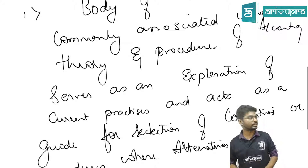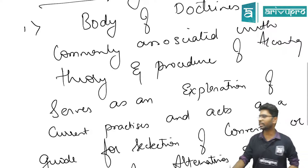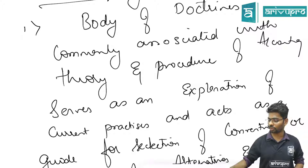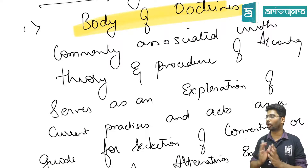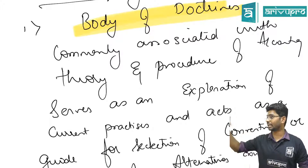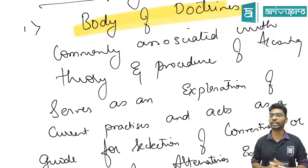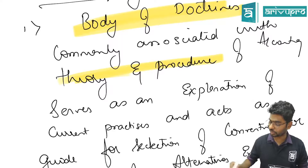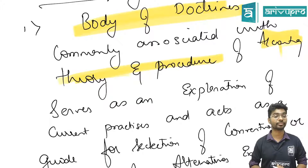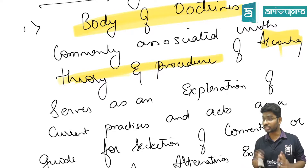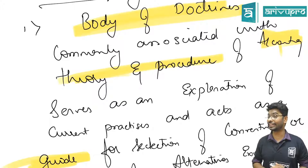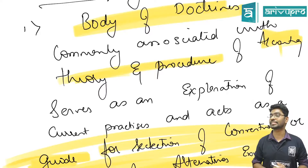A few key things about this definition: first, it is a body of doctrines — rules and regulations. Second, it is associated with the theory and procedure of accounting. It's not only giving you rules and regulations, it's also telling you how to do it. And whenever you have confusion with alternatives, it will act as a guide.